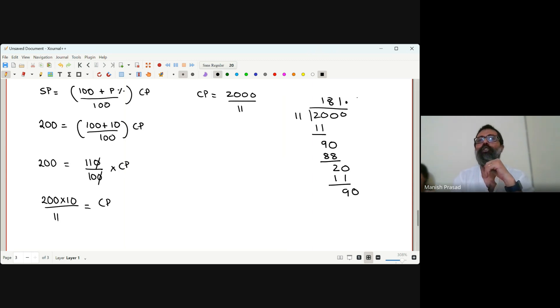11 eights are 88, remainder 2, another zero, 11 twos are 22, and the answer is 181.81. So we got the same answer by both methods.